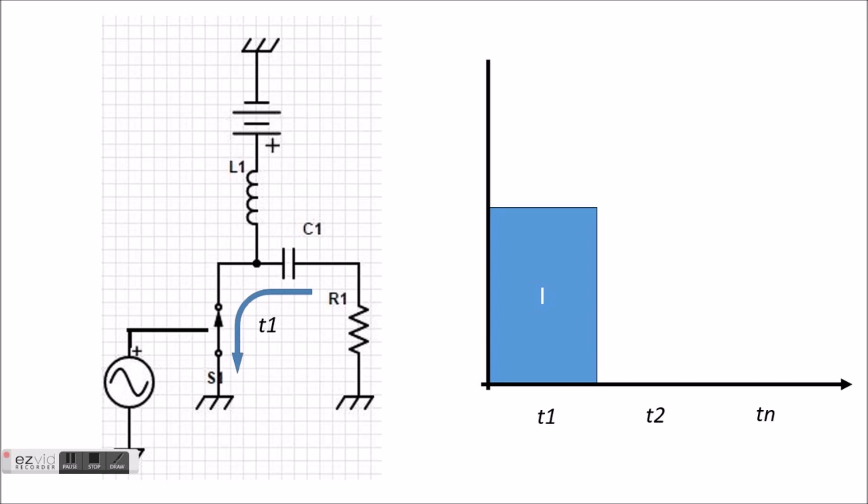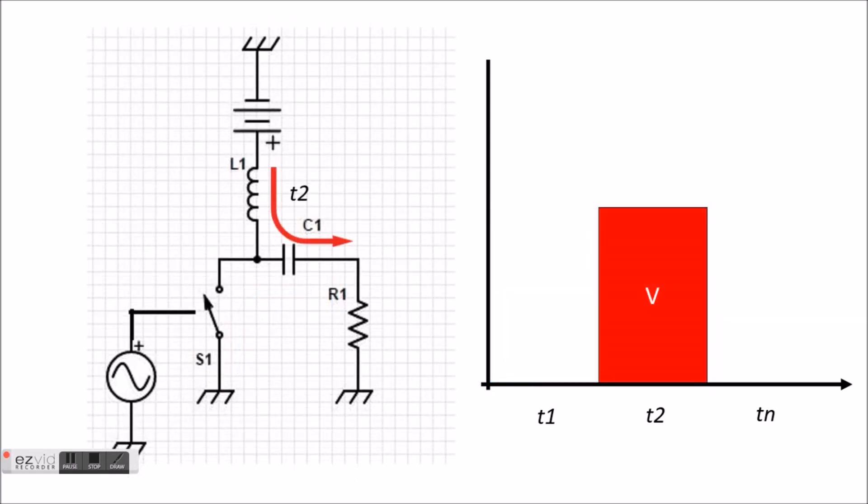So when the switch is closed, AC current flows into the switch into the ground and this occurs during the positive cycle. When the switch is open, current flows into the load resistor building up a voltage.